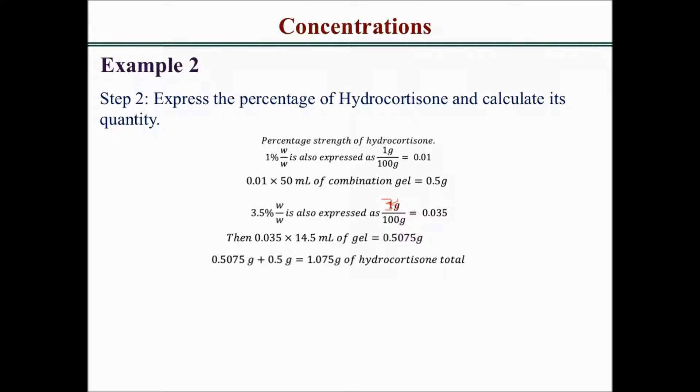That's the total amount of hydrocortisone from both gels. Dividing 1.0075 g by 64.5 mL (total volume) and multiplying by 100% gives approximately 1.56% hydrocortisone. So when you combine 1% hydrocortisone from the 50 mL gel with 3.5% hydrocortisone from the 14.5 mL gel, the resulting concentration is 1.56%.